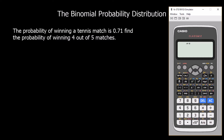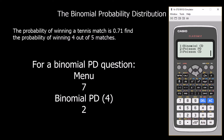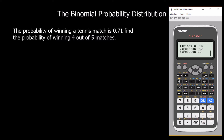In this video we're going to look at the binomial probability distribution, using a calculator to answer the questions. To find the binomial probability distribution, press menu and select number seven. You'll see the binomial probability distribution as number four, and if you click down there's also the binomial cumulative distribution, which we're going to use for some of the questions as well.